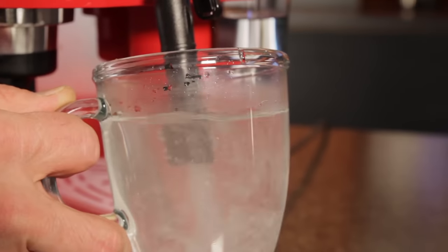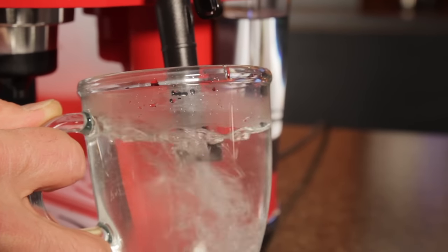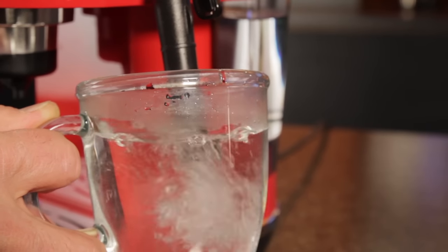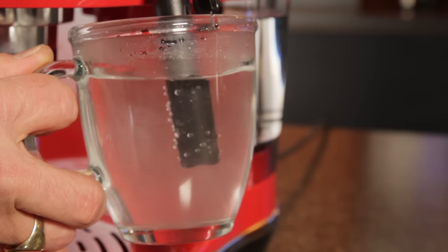So if you want an airy froth for a cappuccino, you might keep the tip closer to the surface of the milk. For a silky microfoam for a latte, you might start close to the surface and then go deeper to add less air and continue swirling.